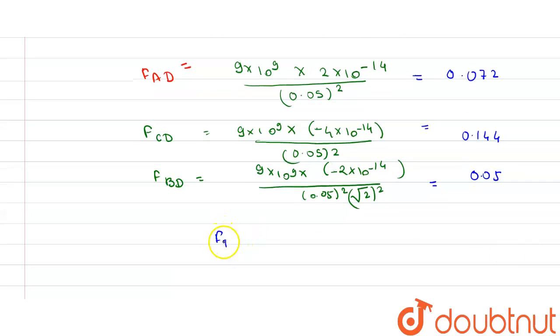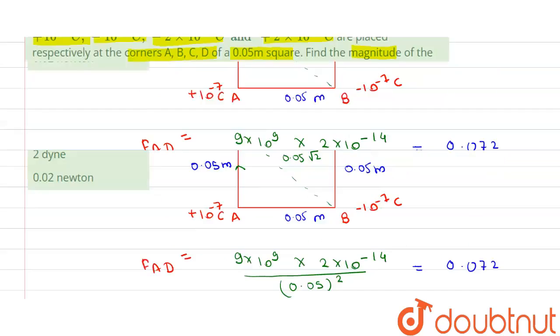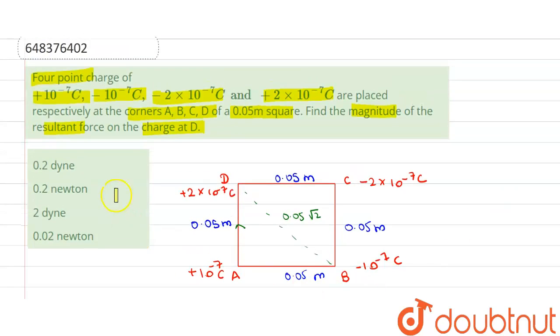So the resultant force on D is equal to, on adding this, is equal to 0.02 newtons. That is why option 4 is the right answer. Thank you.